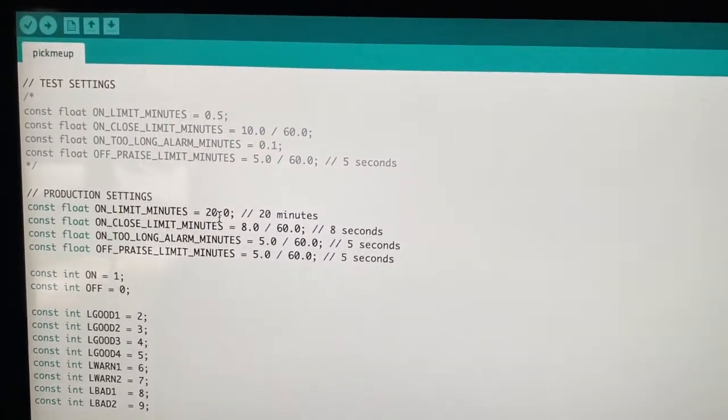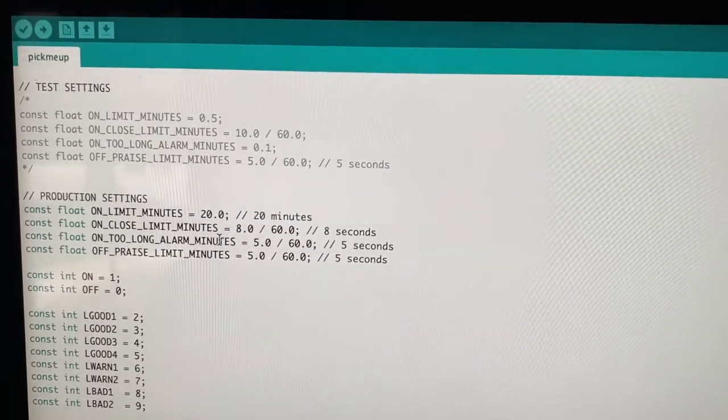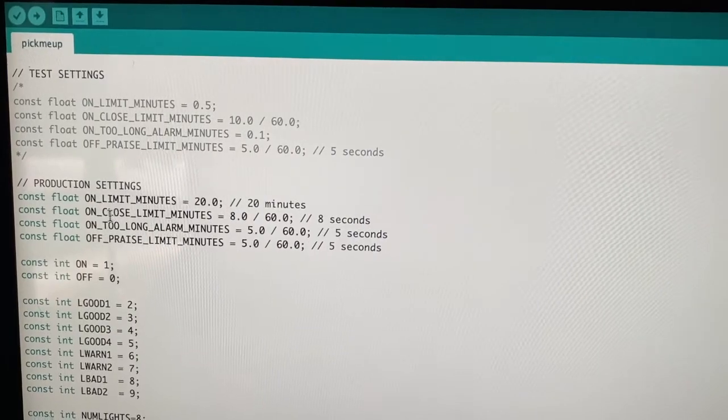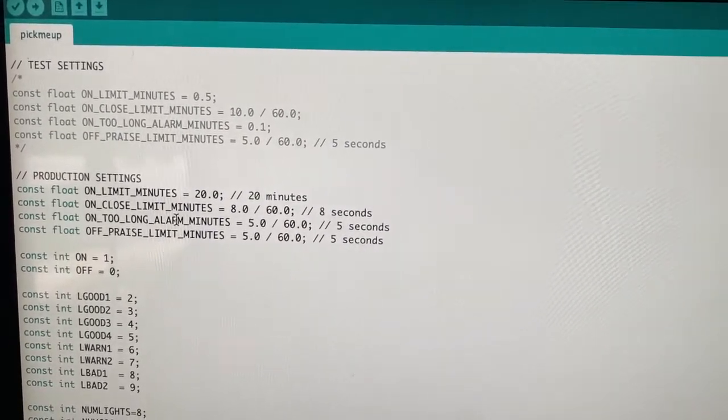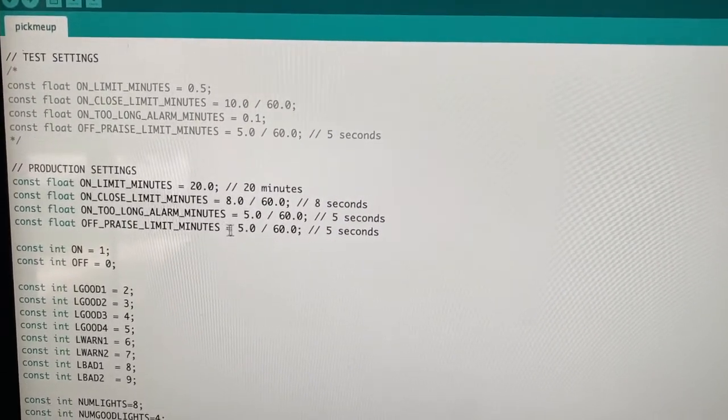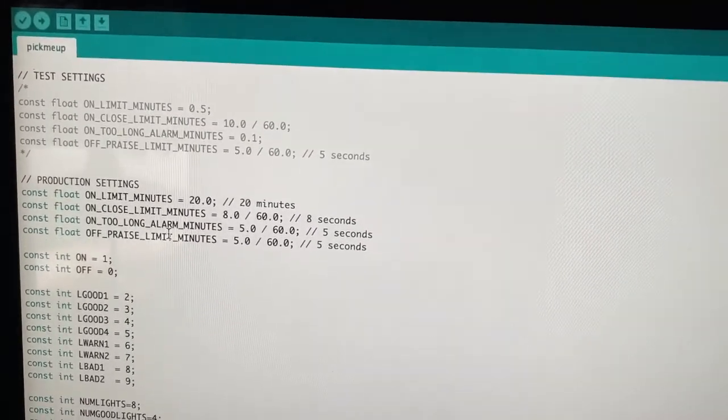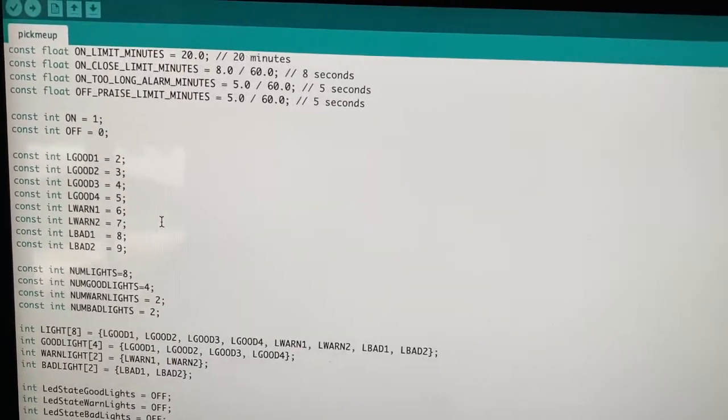They're also setting time limits for are we close to the limit, or are we on too long, and how long do we want to flash lights for. The praise limit is how long do we want to flash the blue lights in order to give some praise for actually drinking.